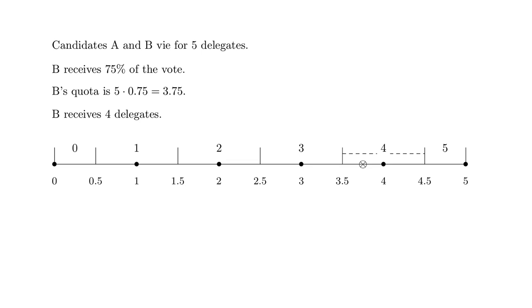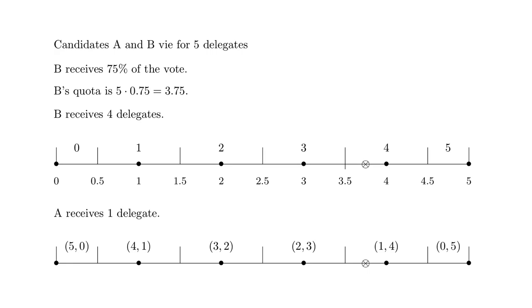Now, delegates are people and don't come in fractions. So, the quota is rounded up and B gets four delegates. The line shows all of B's possible quotas and how they're rounded. Quotas between three and a half and four and a half are obviously rounded to four.